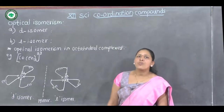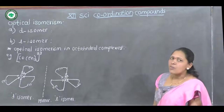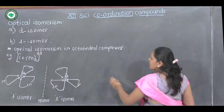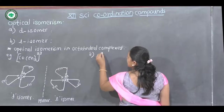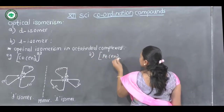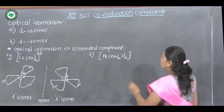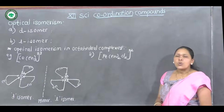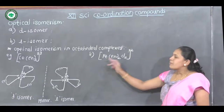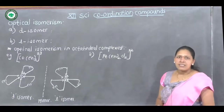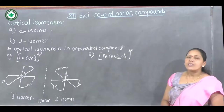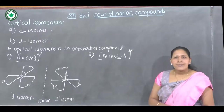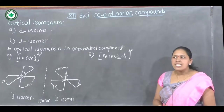Octahedral complexes can show both geometrical isomerism and optical isomerism. For example, [Pt(en)₂Cl₂]⁴⁺ — dichlorobis(ethylenediamine)platinum(IV) — is a cationic complex that shows both optical isomerism and geometrical isomerism, i.e., cis and trans isomerism.